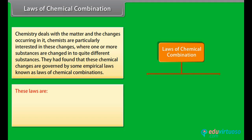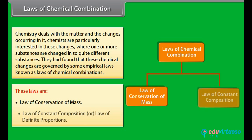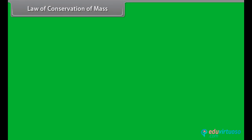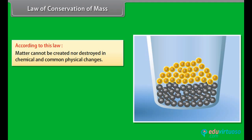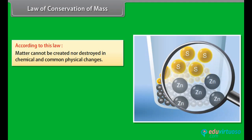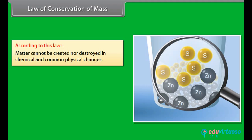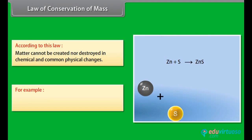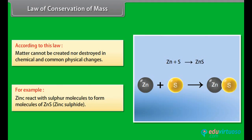They had found that these chemical changes are governed by some empirical laws known as laws of chemical combinations. These laws are Law of Conservation of Mass, Law of Constant Composition or Law of Definite Proportion. According to the Law of Conservation of Mass, matter cannot be created nor destroyed in chemical and common physical changes. For example, zinc reacts with sulfur molecules to form molecules of zinc sulfide.